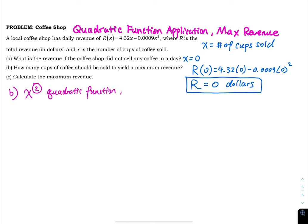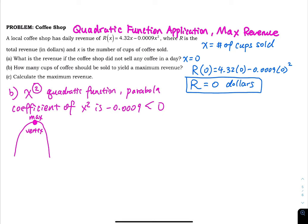The graph of this function is a parabola. The coefficient of x squared is negative 0.0009, so this is negative. That means the parabola opens down and the vertex is a maximum. At that point, your revenue is maximized.